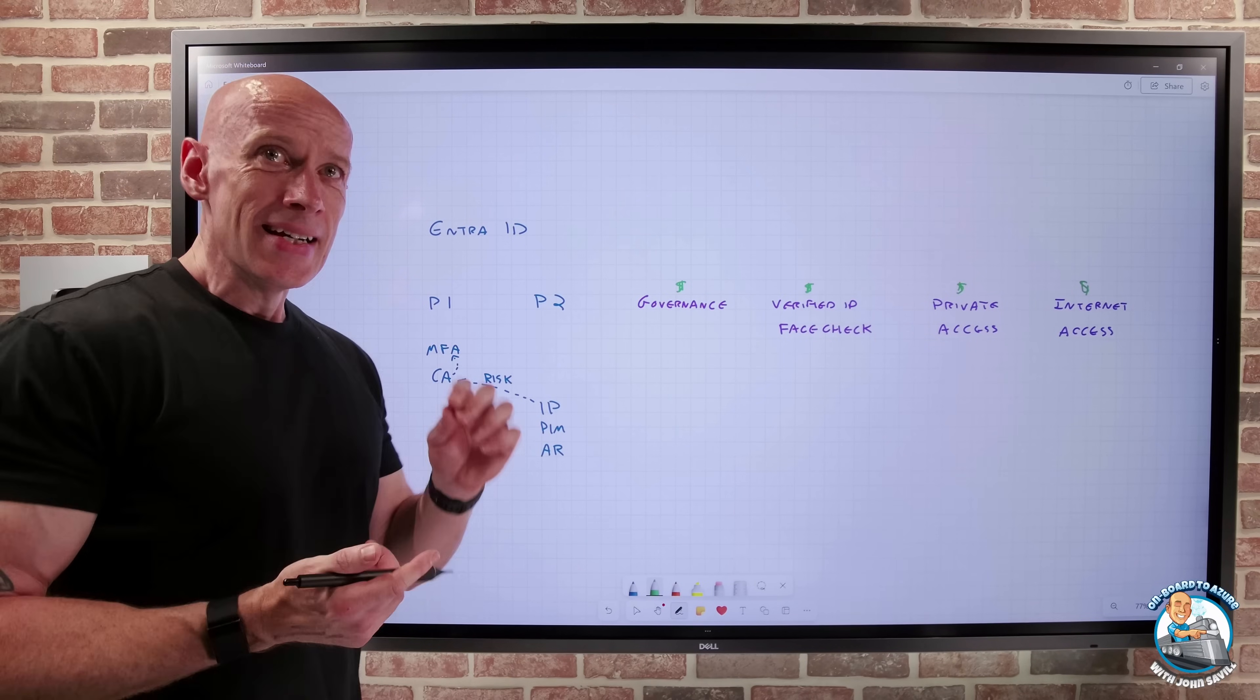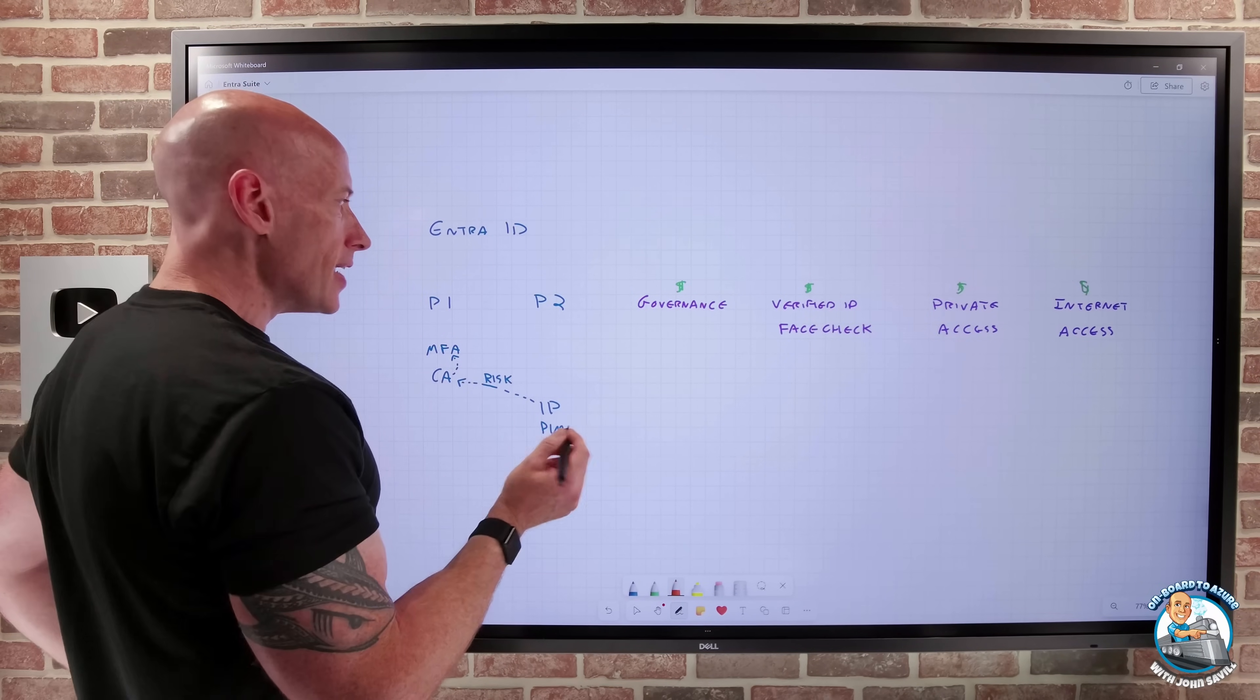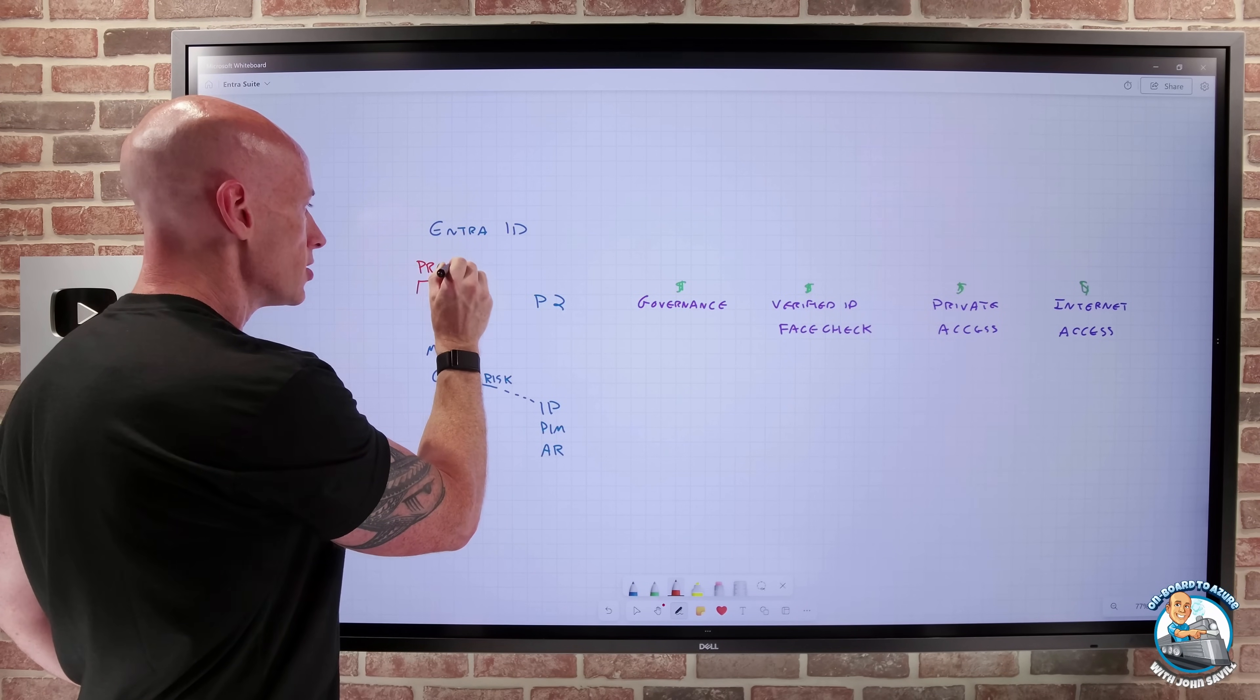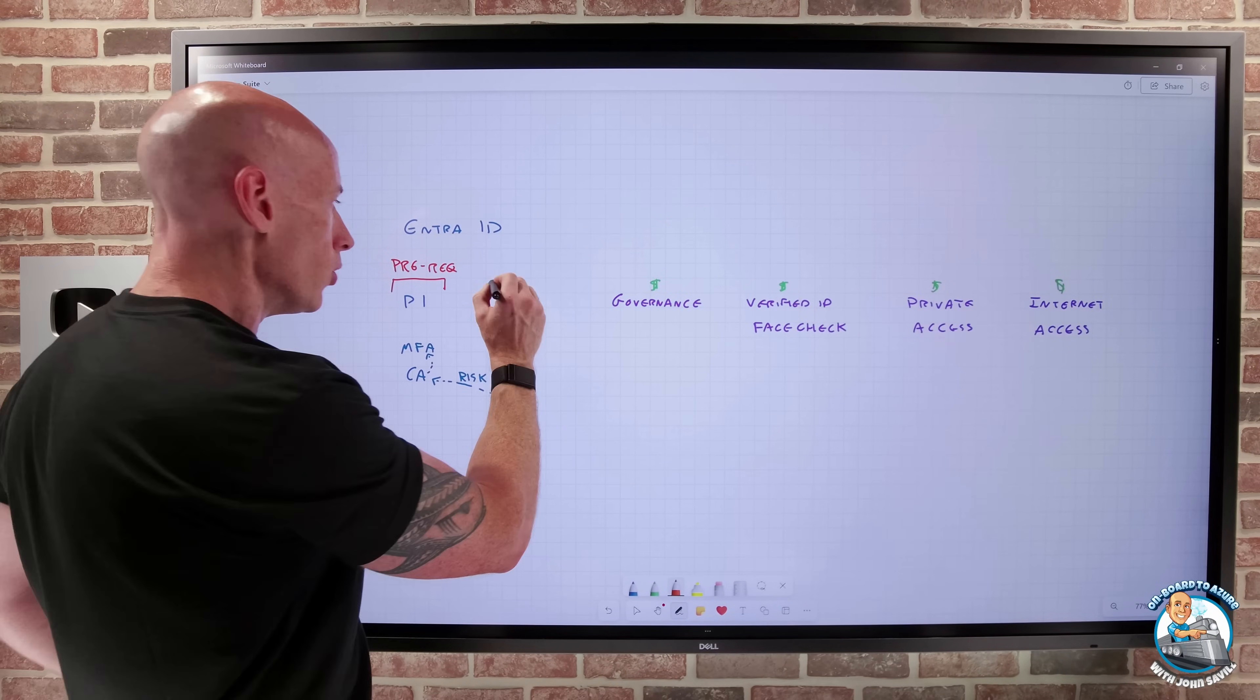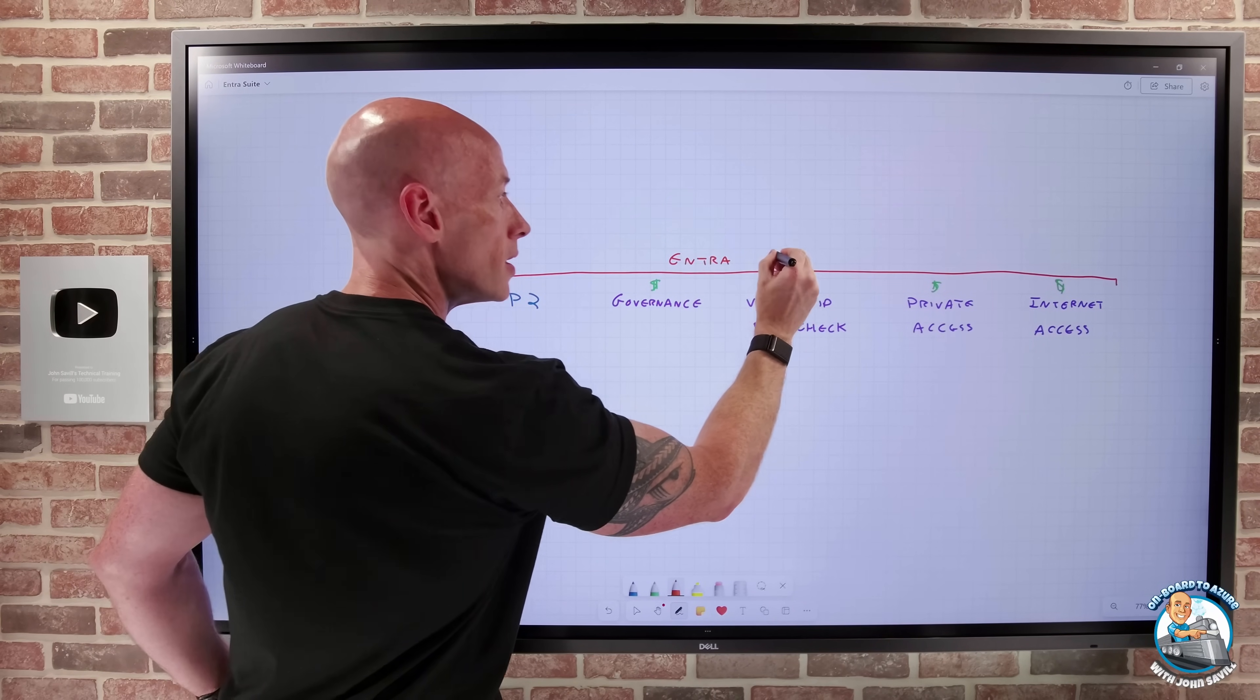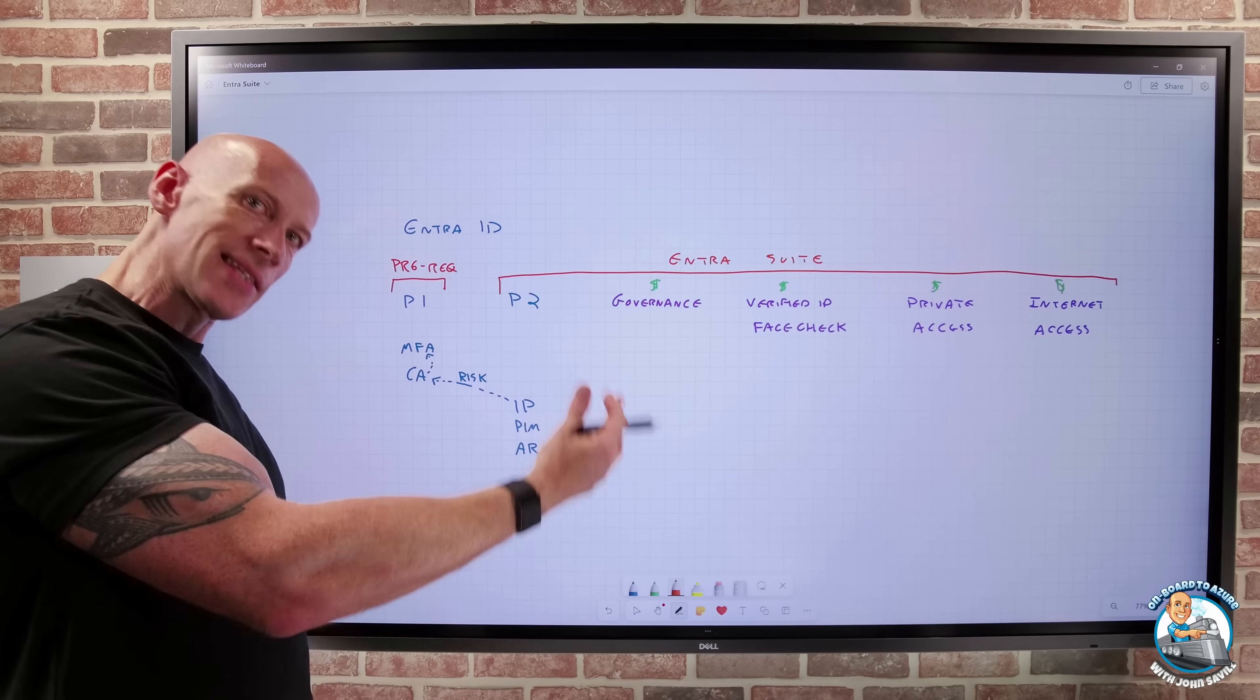And so fundamentally, if I want more than one of these things, it makes sense to do the ENTRA suite. Now, when I think about the ENTRA suite, the prerequisite for this is I must have P1. So this is a prereq. I have to license the users for ENTRA ID P1. And then what the ENTRA suite includes is all of that. So I get all of the capabilities of P2. So I get the identity protection. I get the privilege identity management. I get the access reviews, the basic entitlement management.